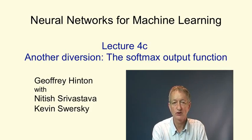In this video, we're going to look at the softmax output function. This is a way of forcing the outputs of a neural network to sum to one, so that they can represent a probability distribution across discrete mutually exclusive alternatives.